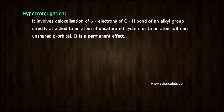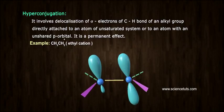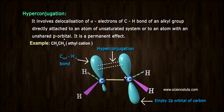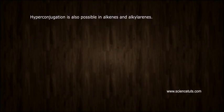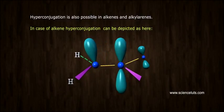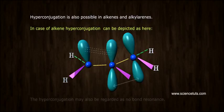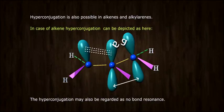Hyperconjugation. It involves delocalization of sigma electrons of C-H bond of an alkyl group directly attached to an atom of unsaturated system or to an atom with an unshared P orbital. It is a permanent effect. Example: CH3CH2+ ethyl cation. Hyperconjugation is also possible in alkenes and alkynes. In case of alkene, hyperconjugation can be depicted as here. The hyperconjugation may also be regarded as no bond resonance.